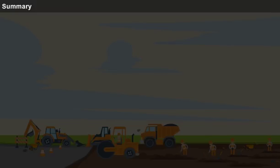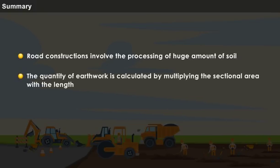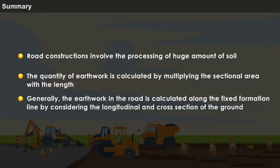Summary. Let us summarise what we have learnt so far. Road constructions involve the processing of huge amount of soil. The quantity of earthwork is calculated by multiplying the sectional area with the length. Generally, the earthwork in the road is calculated along the fixed formation line by considering the longitudinal and cross-section of the ground.